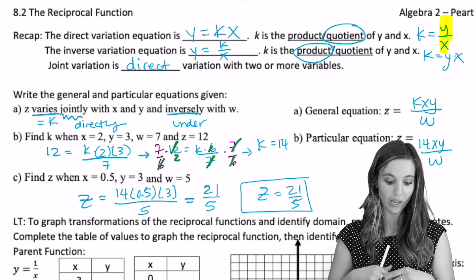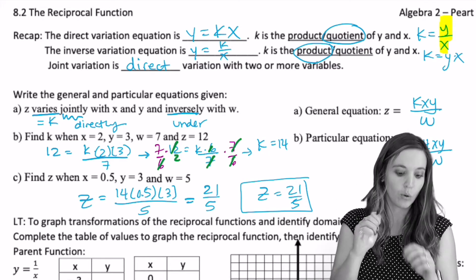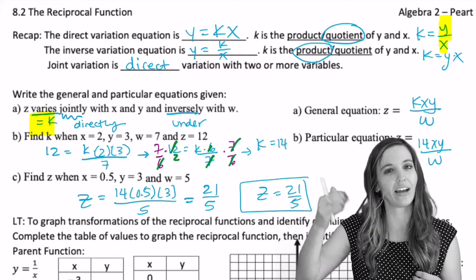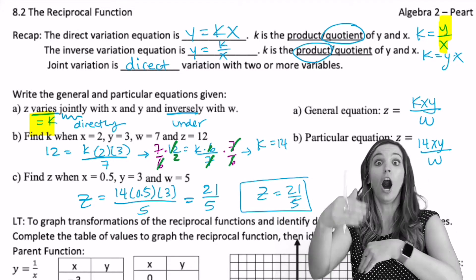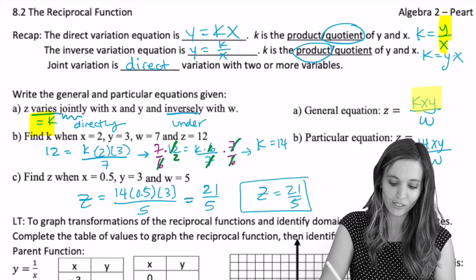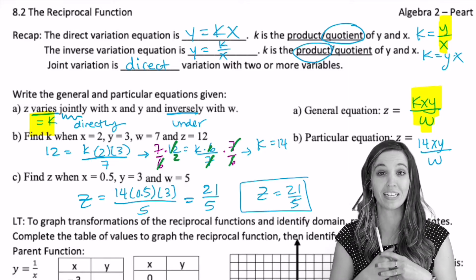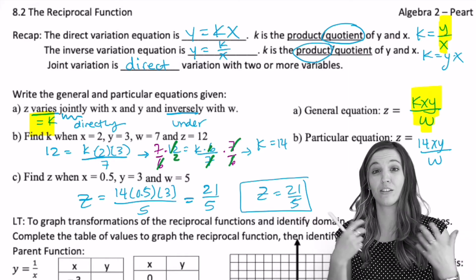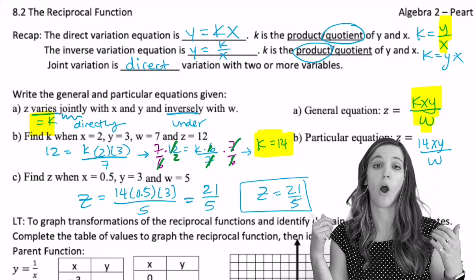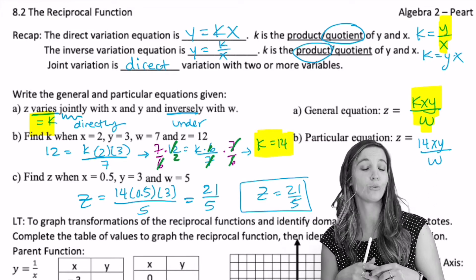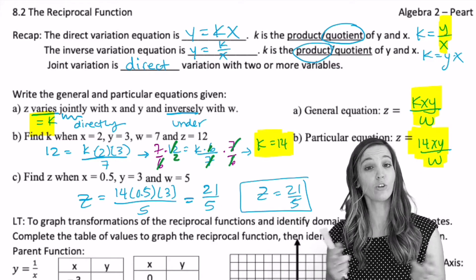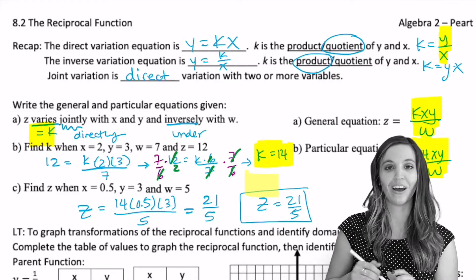Looking at a, b, and c, we had z varies, that means we write equals k jointly, that's another word for directly, with x and y, and then inversely with w. So we've got z equals k times xy divided by w. Then when we're given values, we can solve for that constant of variation k. And in this case, it ends up being 14. So our particular equation is z equals 14xy divided by w. So when we're given values for x, y, and w, we can find z.